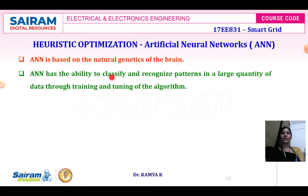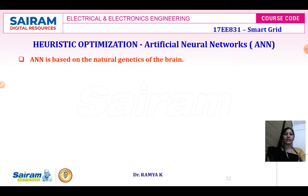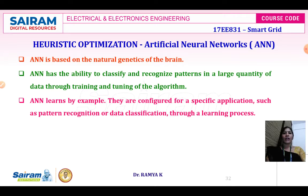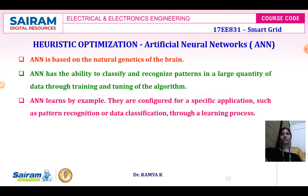ANN has the capability to classify and recognize patterns in a large quantity of data through training and tuning of the algorithm. Training and tuning is essential in ANN. It learns by example. The key element of the ANN paradigm is the novel structure of an information processing system comprising a large number of highly interconnected processing elements — neurons — which work in unison to solve a specific problem.